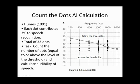Higher frequency information appears more important for speech recognition ability. There are a total of 33 dots, and the task is to count the number of dots equal to or above the level of the threshold and calculate the audibility of speech — the AI.